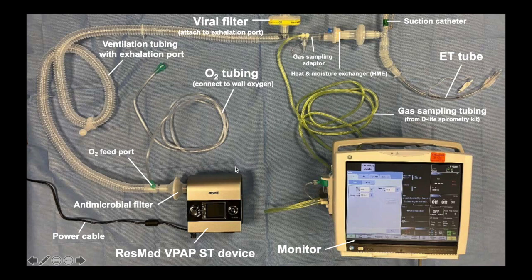This is a view of the entire setup. Right here we have the VPAP-ST device. It is connected directly to an antimicrobial filter, which is then connected to an O2 feed port, and this O2 feed port is attached by oxygen tubing to wall oxygen. The O2 feed port in turn is connected to ventilation tubing that has to have an exhalation port,